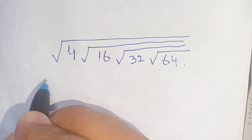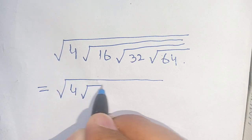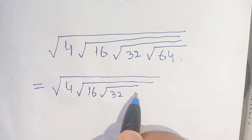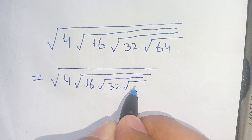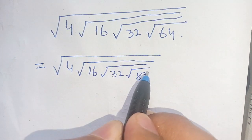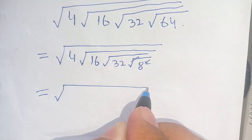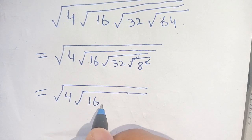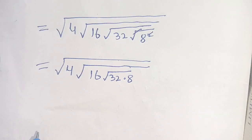Let us solve this. We can write it as square root of 4 times square root of 16 times square root of 32 times square root of 64. Now, 64 can be written as 8 power 2, so we can cancel out this square by the square root, and we get square root of 4 times square root of 16 times square root of 32 times 8.